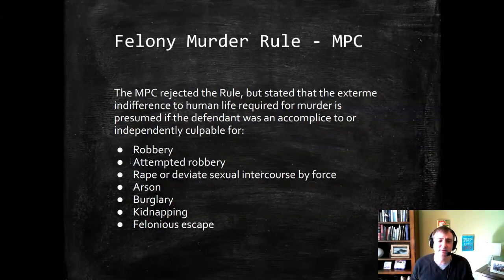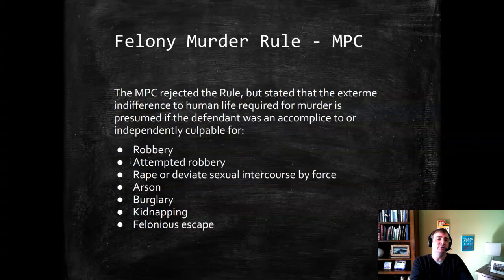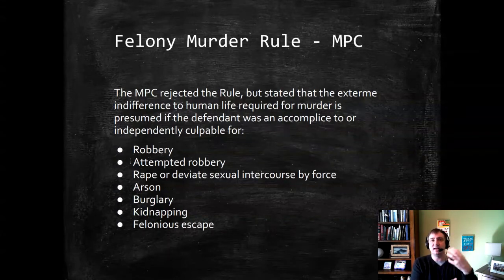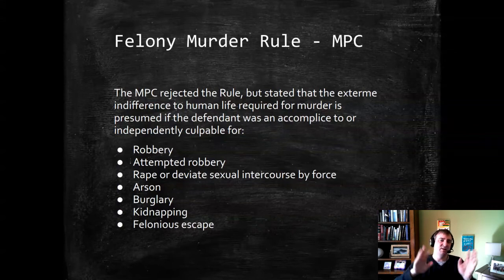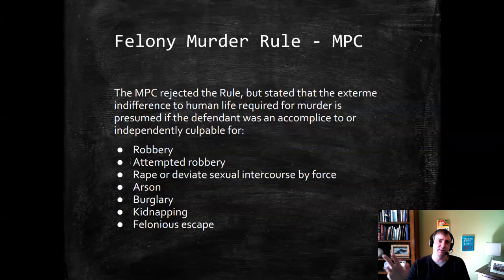Historically, the idea behind the felony murder rule — which we've largely rejected in our law — was that people are basically wicked or good. It was acceptable to say: because they're already committing a serious crime and have the mens rea associated with that crime, and a death results, we can skip the niceties of mens rea applied to the homicide charge. This rule stems from that tradition, which the MPC was against and which even common law has largely moved away from.